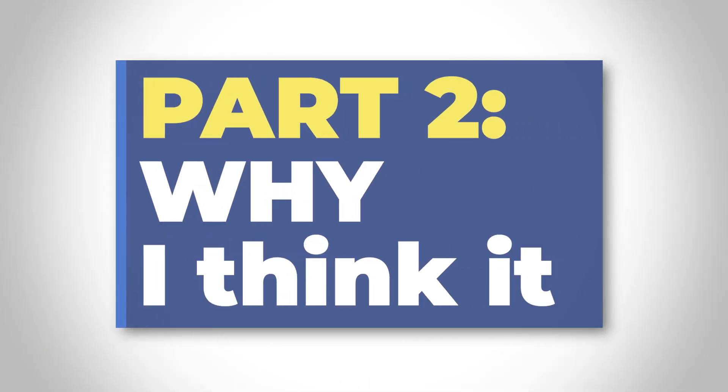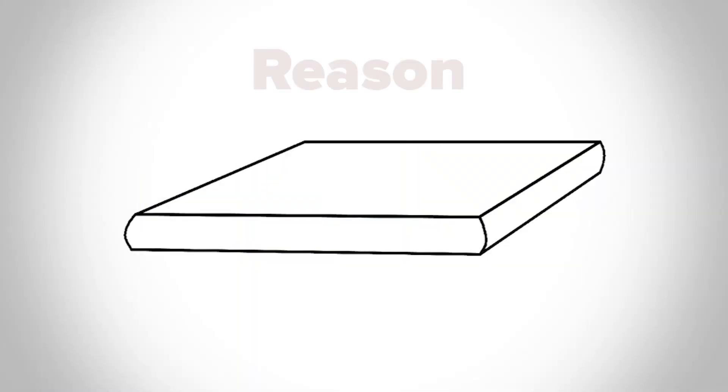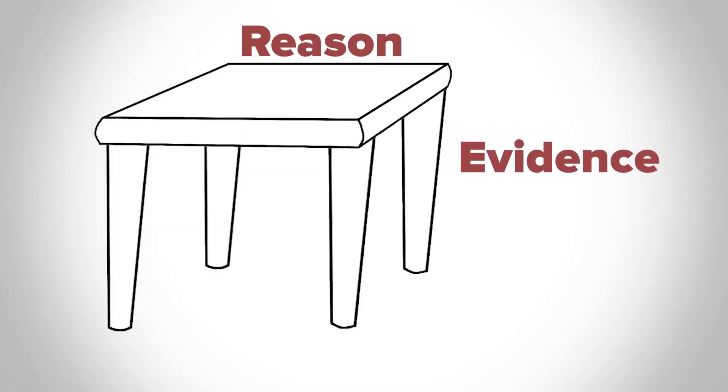Part two: why I think it. The body or middle of every persuasive piece consists of three to five reasons presented as body paragraphs. Using the table analogy, each reason is like the top of a table. However, stating a reason is just the starting point. Just as a table wobbles without legs to hold it up, persuasive reasons carry no weight without proof.